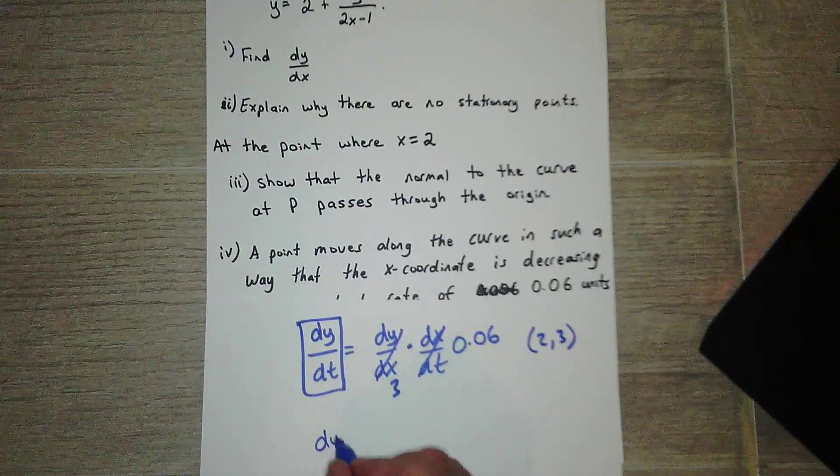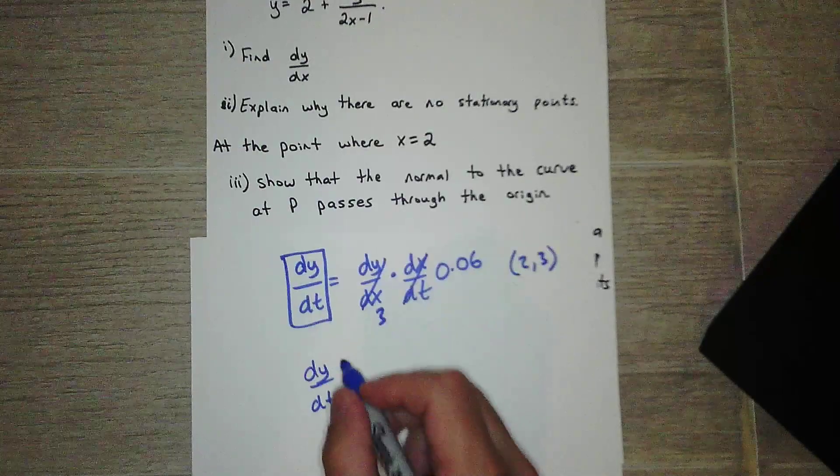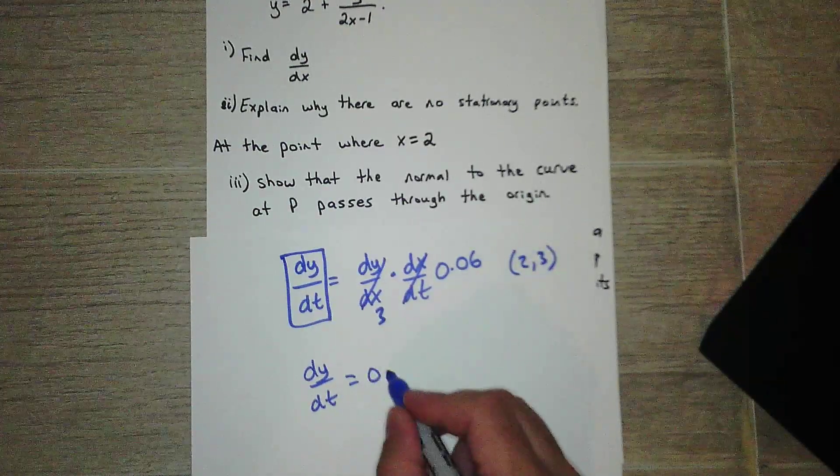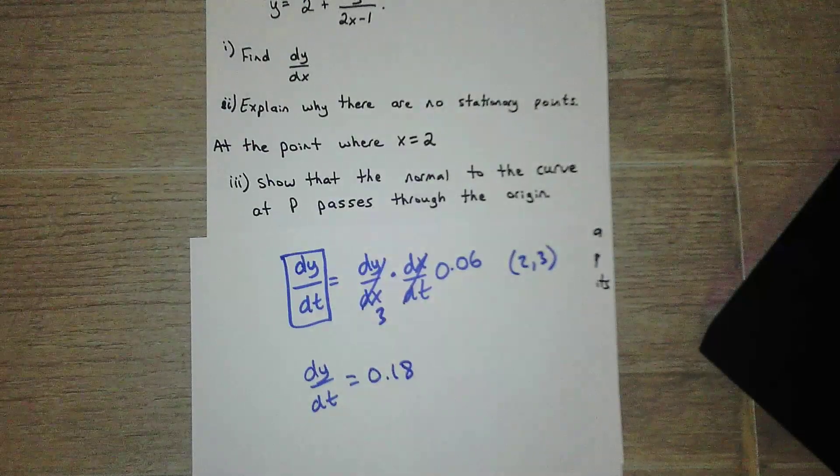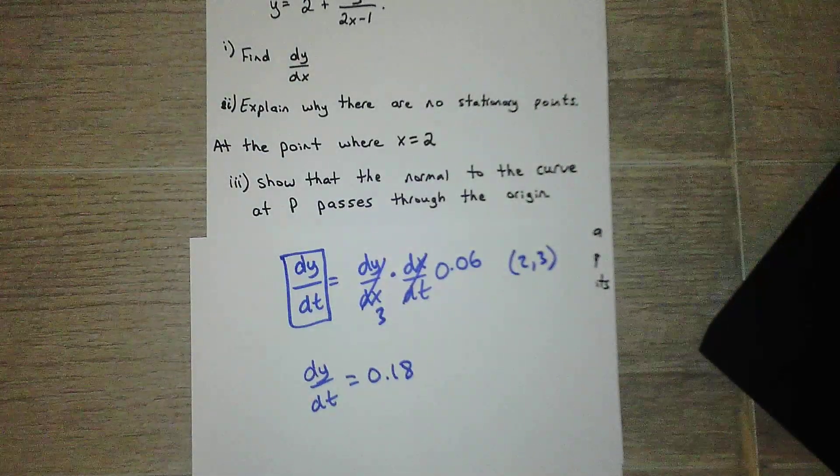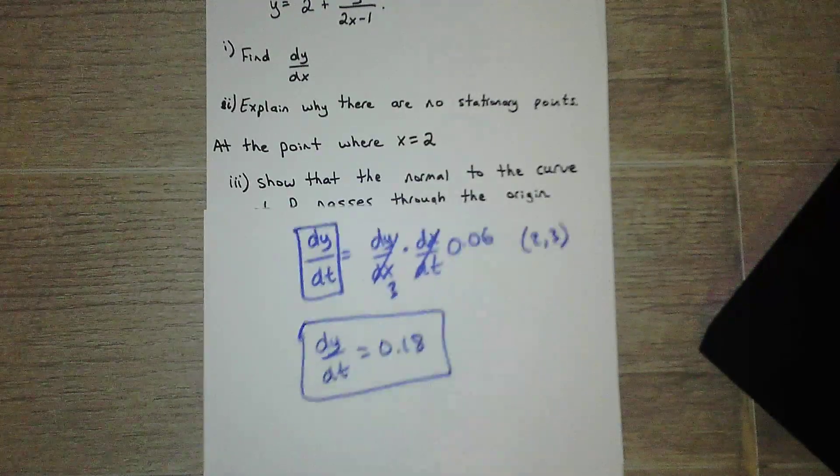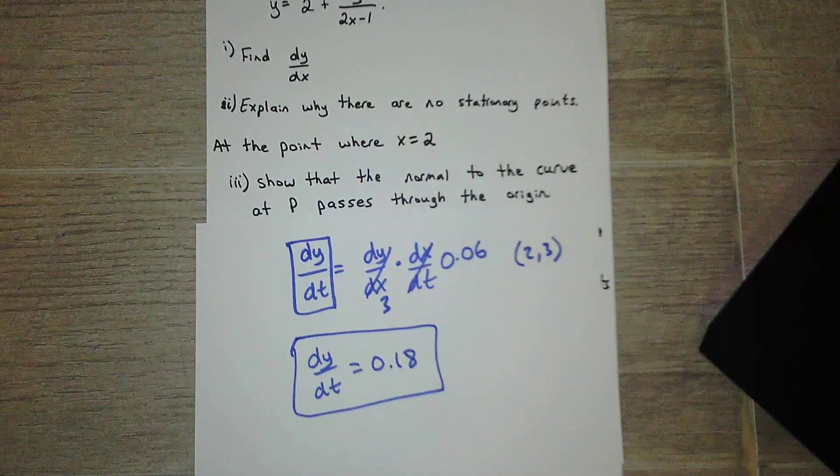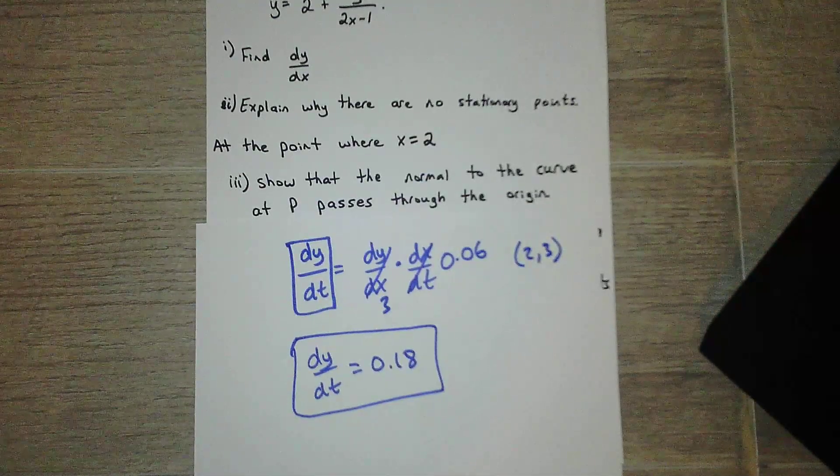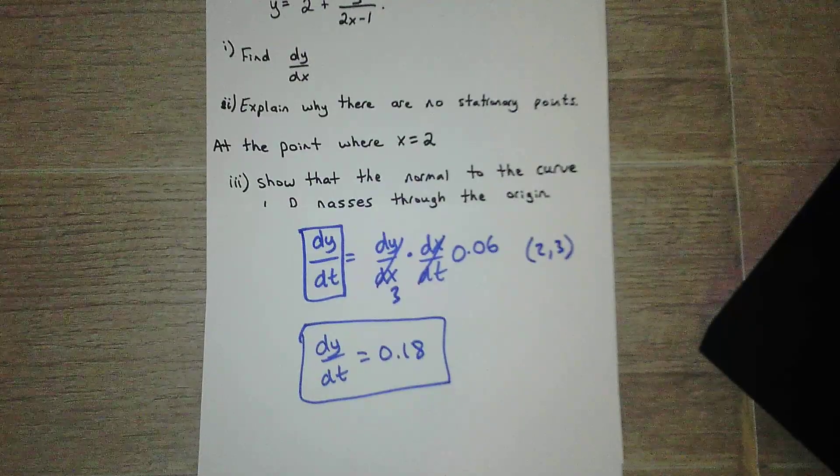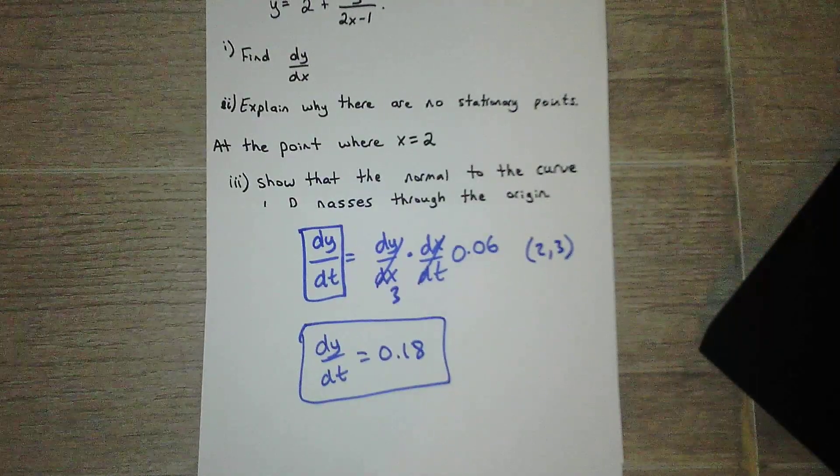Okay, so then dy/dt is just negative two thirds times 0.06, which is 0.18. Okay, so that's pretty much it. Hopefully you were able to do that on your own. If not, hopefully me working through it helped you find where you went wrong. If you still have questions and you know what to do, just message me on Teams. Thanks, guys. See you all next week.